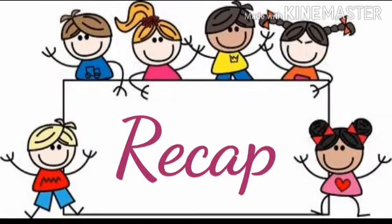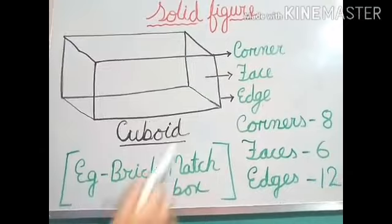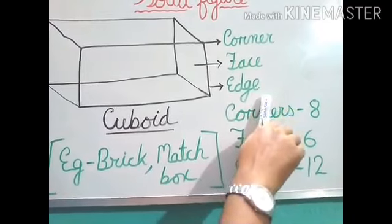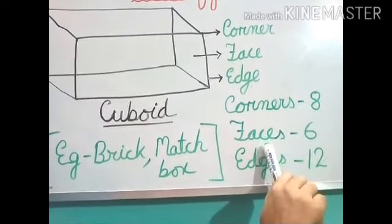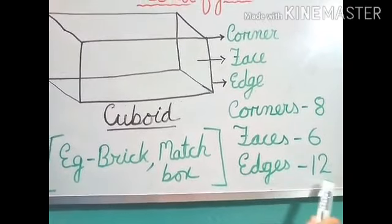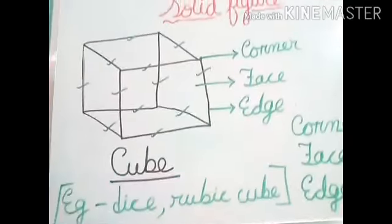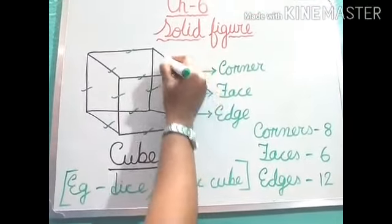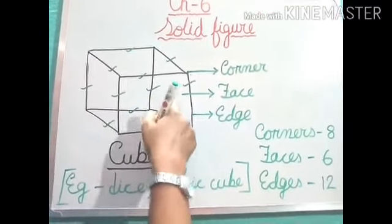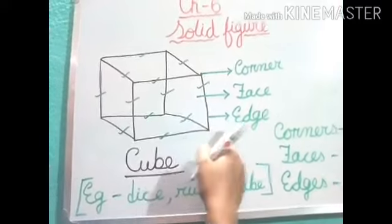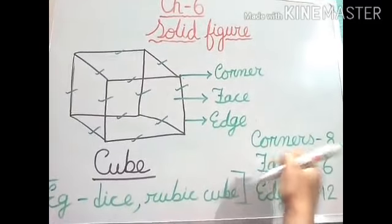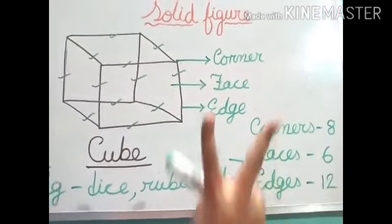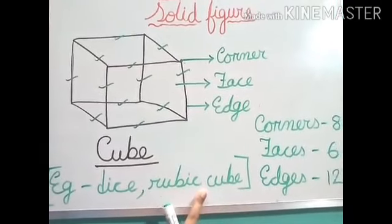So again, now recap. So again see. This shape we call cuboid. Cuboid has corner, face, and edge. Corners are eight, face is six, and edges twelve. Now, next shape I am showing. This is a shape of a cube. Corner is this one where all the edges are joining. Face is this portion, and the edge is this portion. So total how many corners are there? Eight corners. Face is six, and edges twelve. And we have written two examples, dice and Rubik's cube.